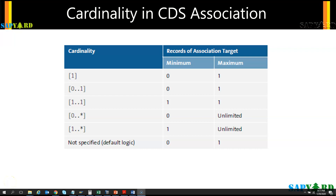Cardinality is the relationship between the source and the associated tables, CDS views, table functions, or SQL views included in the definition of the association. It has a form of minimum and maximum. Please note that this minimum and maximum applies only to the target table, target view, or target SQL — not to the source. So cardinality is applicable only for the target.